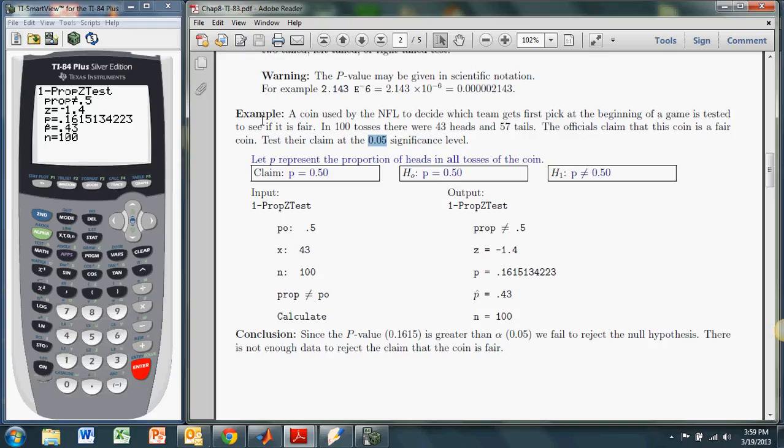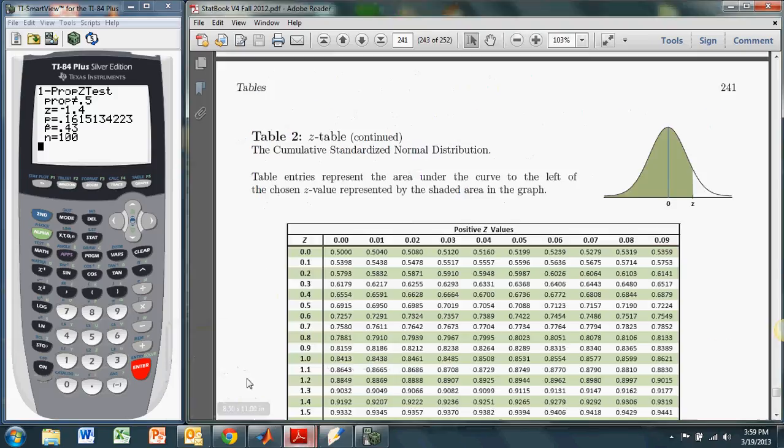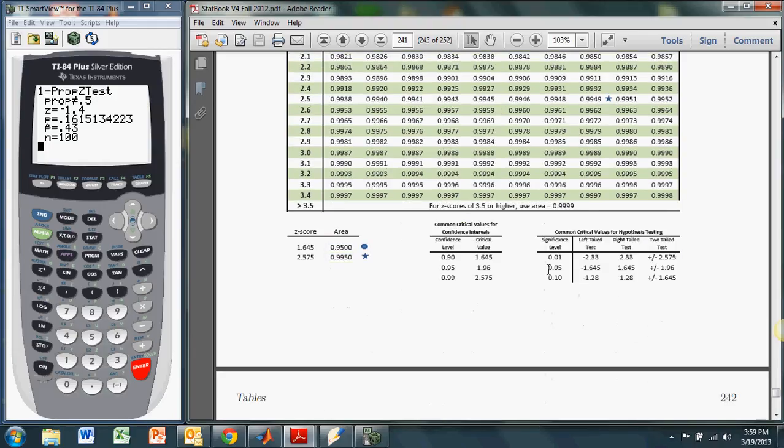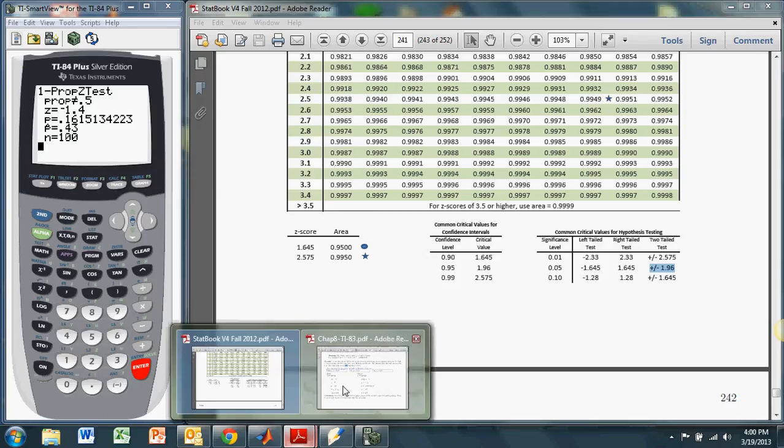One thing this doesn't give you is the critical value. If we wanted to get the critical value, we would have to go to the table in the back of the book, the z table. We're looking at a 0.05 significance level. It is a two-tailed test. So our critical values are plus or minus 1.96. And if you look at our test statistic over here, it's negative 1.4. So we're not in the rejection region. The p-value tells us the same thing. We failed to reject the null hypothesis.